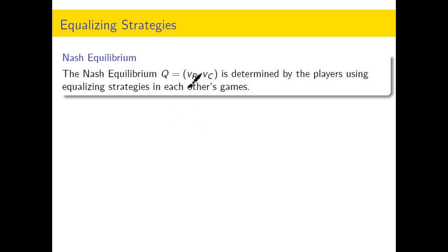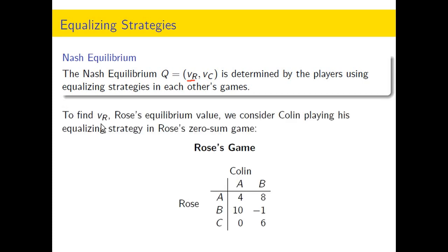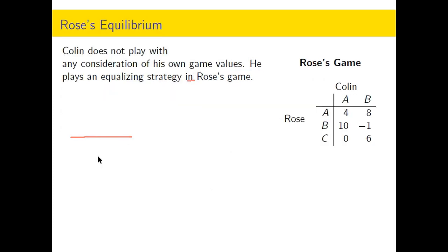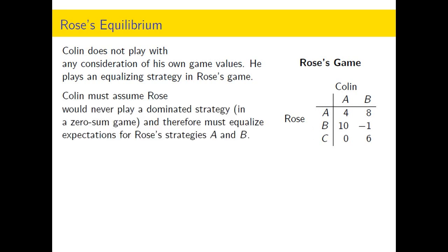We are looking for the Nash equilibrium point. We'll establish the value for Rose — the x-coordinate of the Nash equilibrium — by looking at Rose's game, where Colin is going to play his equalizing strategy, not his best strategy. In Rose's game, his equalizing strategy must first assume that she's not going to play the dominated strategy.